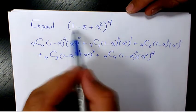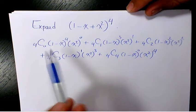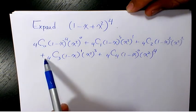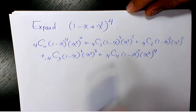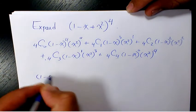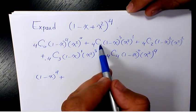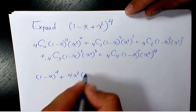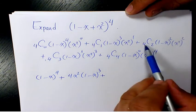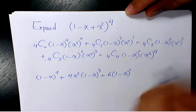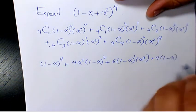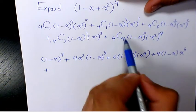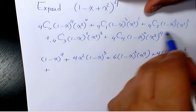As you can see, the exponent of the first term is decreasing and the exponent of the second term is increasing. Now let's evaluate these terms. We can use either the formula or Pascal's triangle. Pascal's triangle gives us five coefficients: 1, 4, 6, 4, 1. So the first term is (1 minus x) to the power of 4, plus 4 times x squared times (1 minus x) to the power of 3, plus 6 times (1 minus x) squared times x to the power of 4, plus 4 times (1 minus x) times x to the power of 6, plus x to the power of 8.